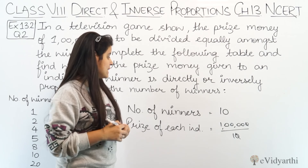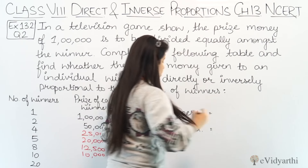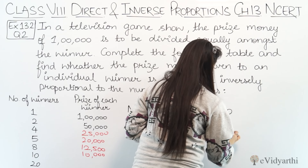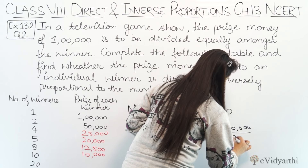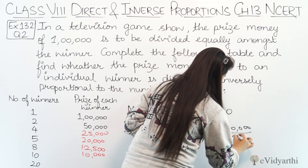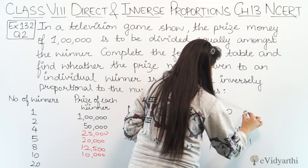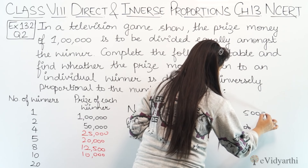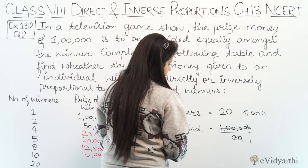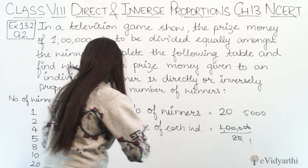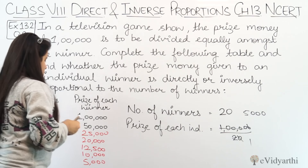Now let's come to the last number of winners. Next number of winners are 20. Ab isi 1 lakh ko agar 20 logon mein divide karna hai, so 1,00,000 divided by 20 — hmare paas aa gaya 5,000. So this will become 5,000.